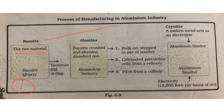Bauxite is the raw material of the aluminum industry. It is very bulky and heavy. We get bauxite from a bauxite quarry. A quarry is the place from where minerals are extracted — deep pits dug inside the earth's crust — and with the help of machines the minerals are extracted through mining.